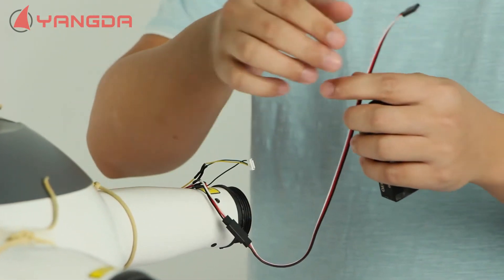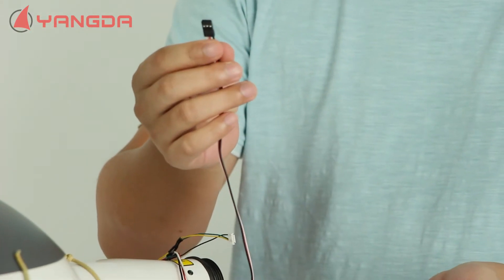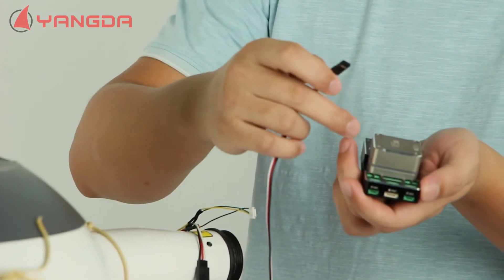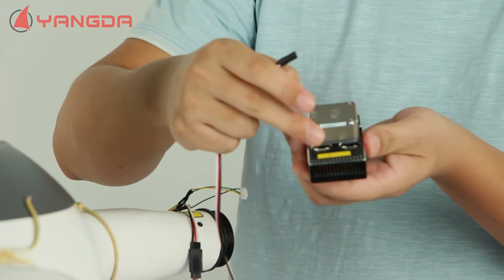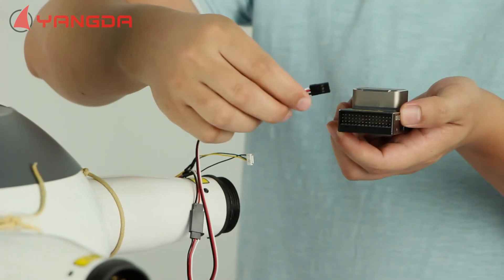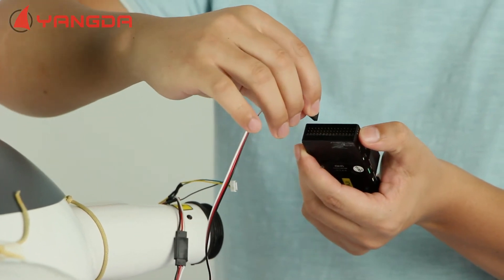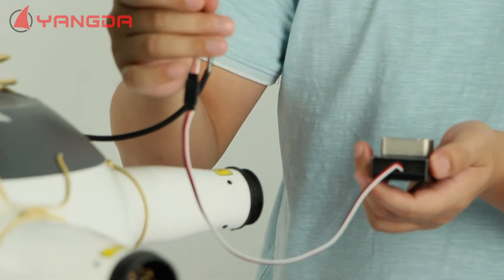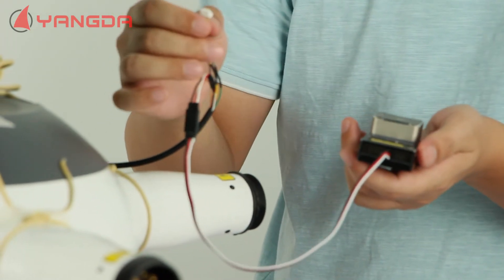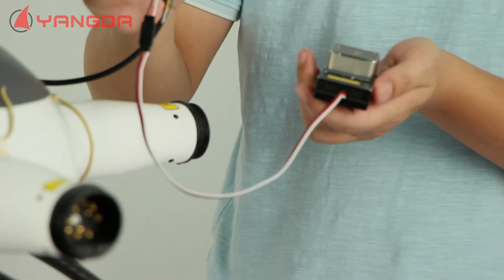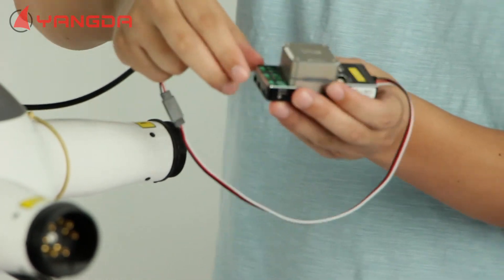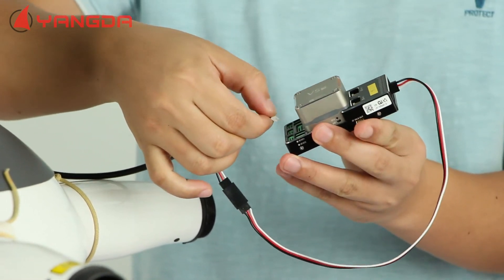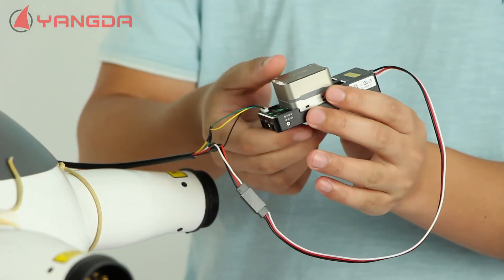This one is used to connect with the PWM signal of the autopilot. And this is the serial port for the data communication. We need to connect it with the telemetry port of the flight controller. And this one is used to connect with the battery.